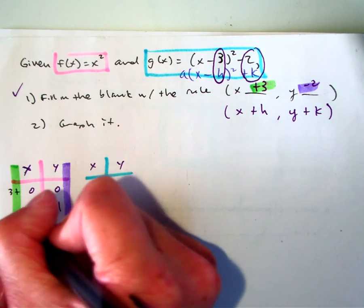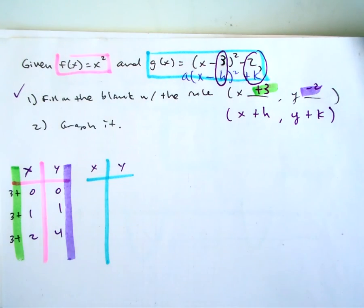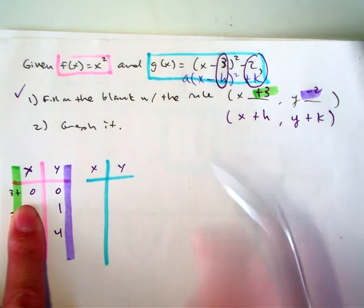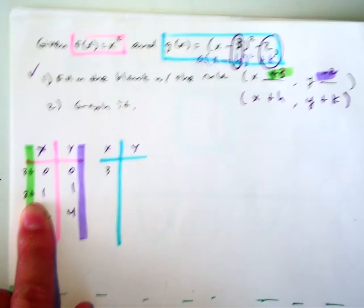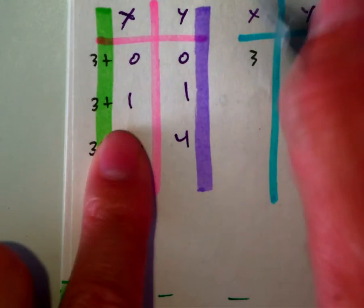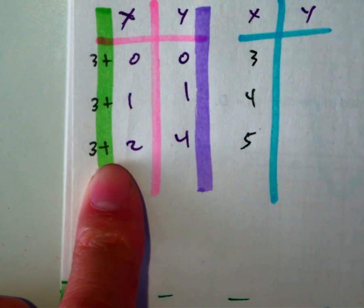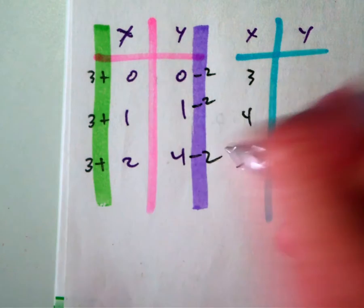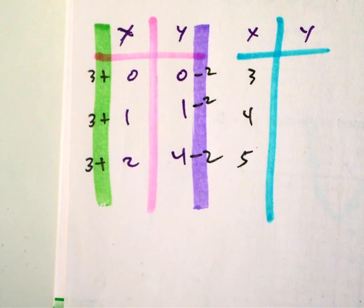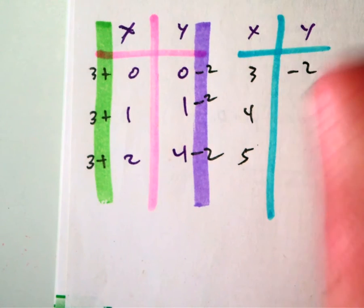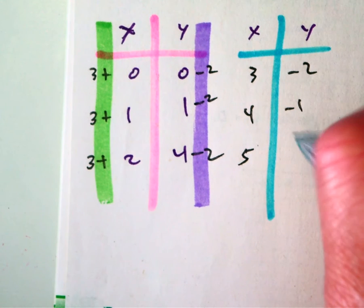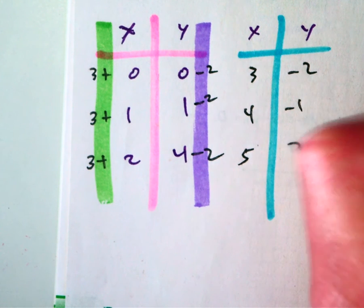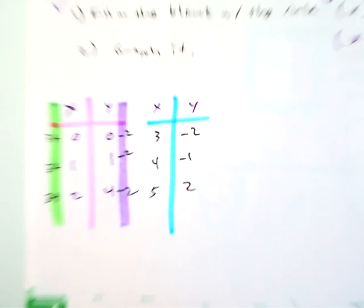So if I add 3 here, what do I get, Raymond? Correct. And then if I put the minus 2 here? Yes. And positive 2? All right, so let's go ahead and graph this.